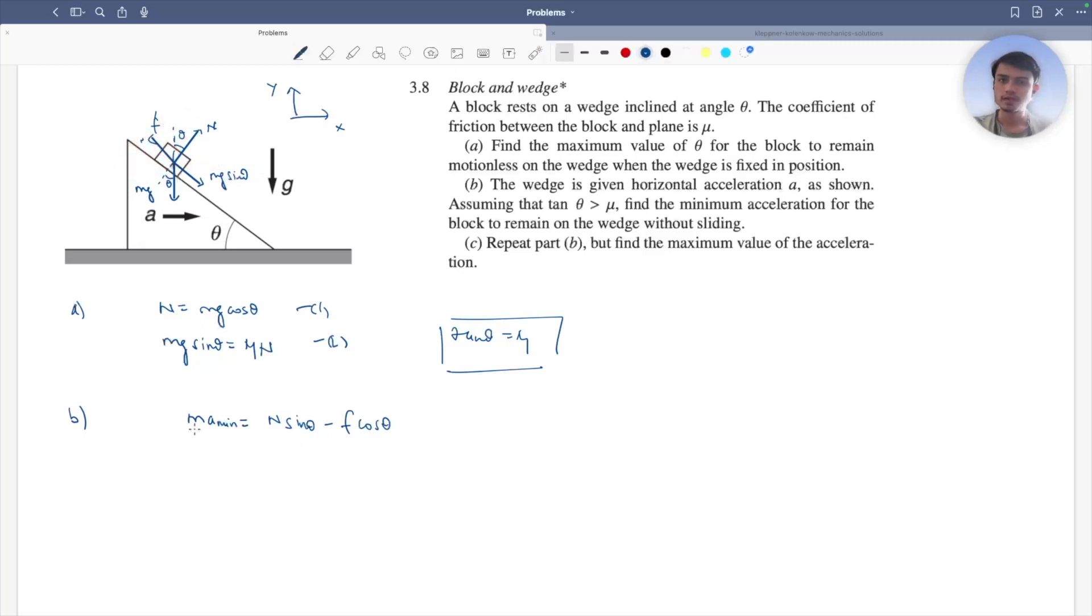Along y axis, since the wedge is only moving in x axis, there will be no motion in y axis. So I can say there's this force balance in y axis that will be given as, you take this n cos theta and then you take the sin theta component of it plus f sin theta equals to mg.